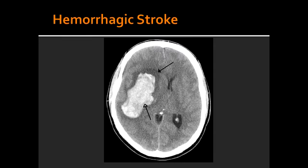Hemorrhagic stroke can also occur secondary to ischemic stroke. Because after ischemia, there is reperfusion. This leads to increased vessel fragility, and if the vessels are fragile, they can bleed out and lead to a hemorrhagic stroke.